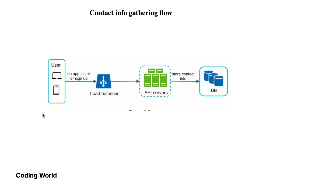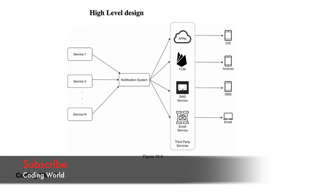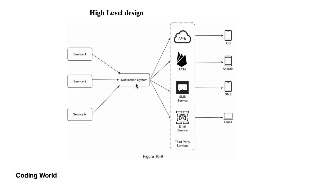Before sending messages you need to gather the information about whom to send. When a user logs into your application from a computer or mobile, all that information is stored via the API server into the database, and this data is used while sending notifications. In the high level design, services produce notifications which are redirected to the notification service system.